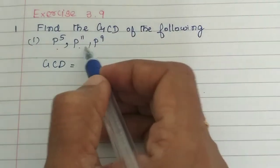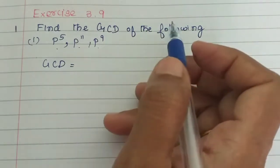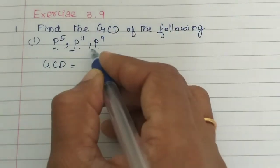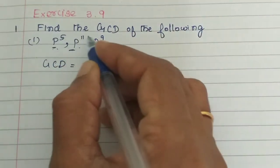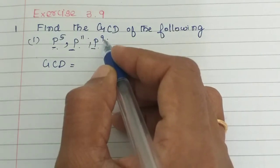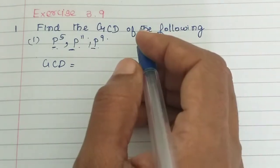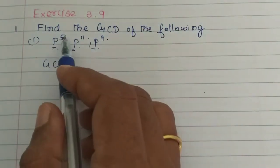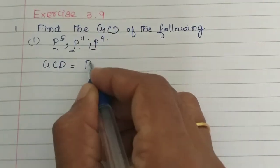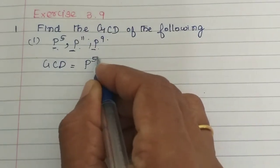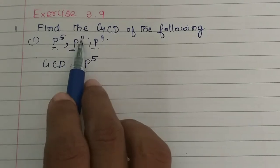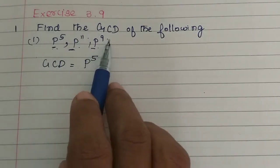If you look at these three terms, the base is the same. The power that is least is the Greatest Common Divisor. The least power is 5, so P5 is the Greatest Common Divisor of P5, P11, and P9.